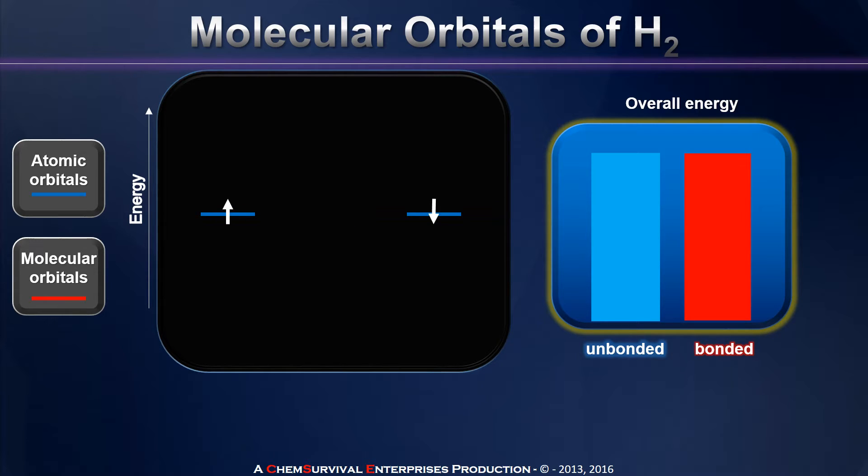When this happens, we always get a combination that is sort of centric around that non-bonding energy. In this case, we formed two new molecular orbitals from our two atomic orbitals. One is the sigma, one is the sigma star.